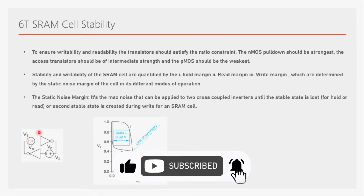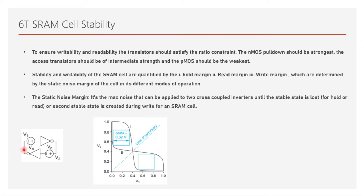For the hold margin test circuit, there is no read or write operation happening, so both access transistors are turned off. We introduce a noise source Vn into the cross-coupled inverter latch. When Vn is zero, the two stable states are clean: when V1 is zero, V2 is high, and when V1 is one, V2 is zero. These correspond to the two curves of the two cross-coupled inverters.